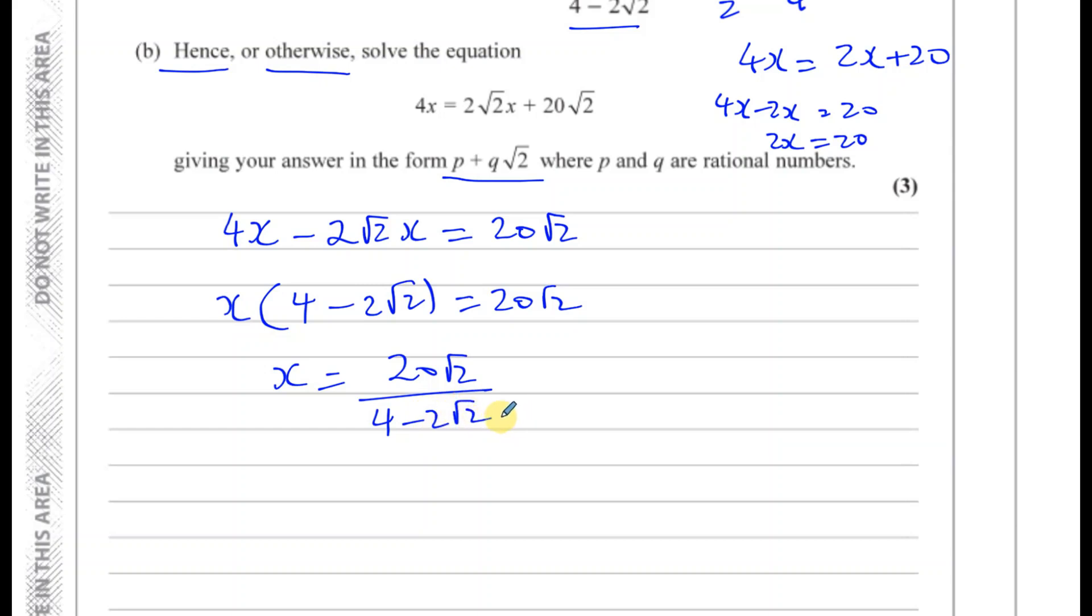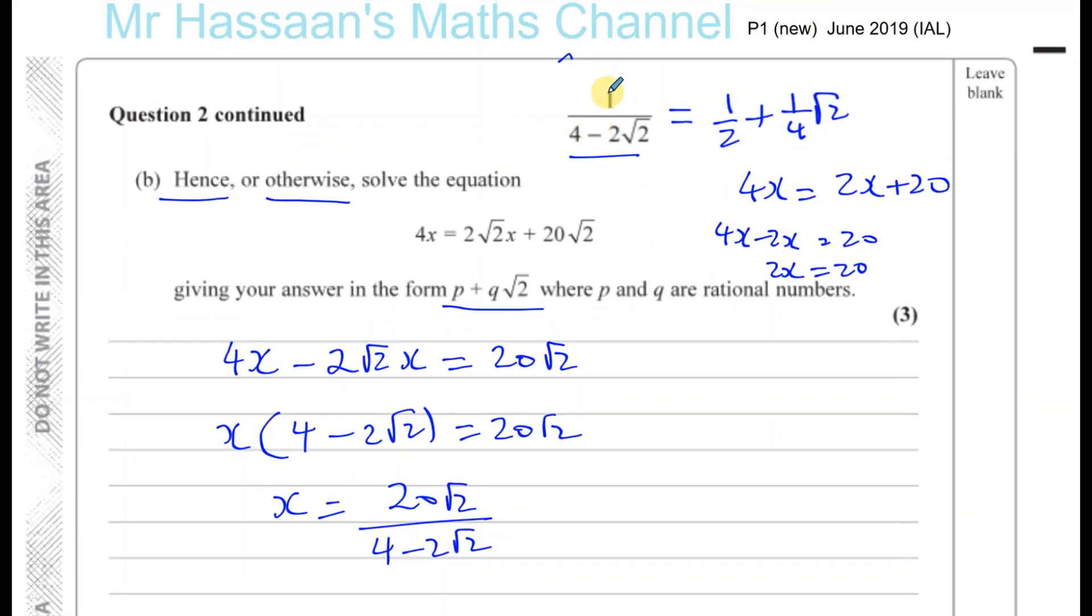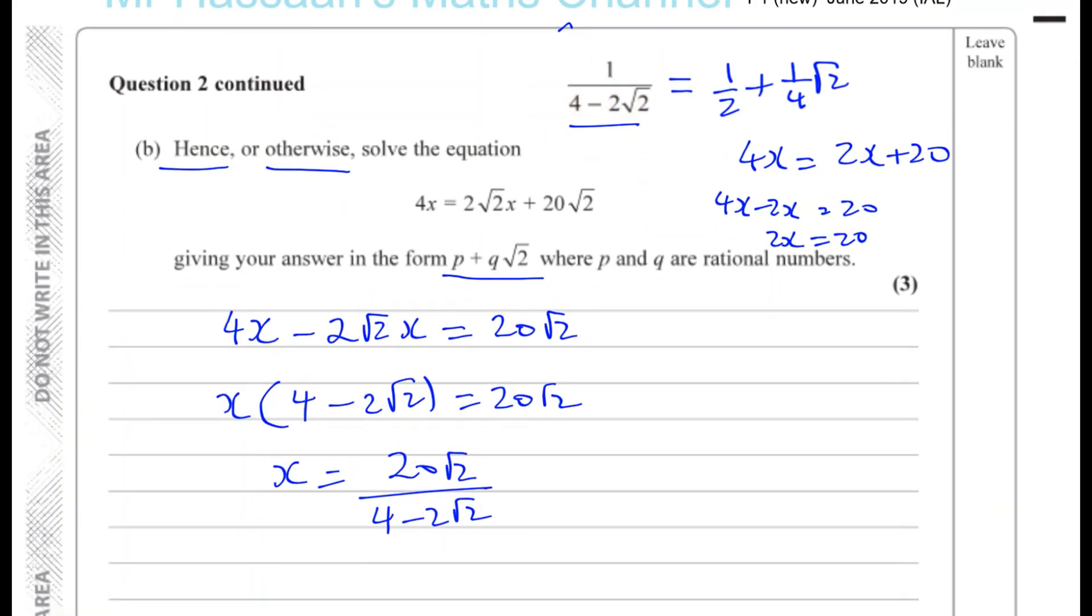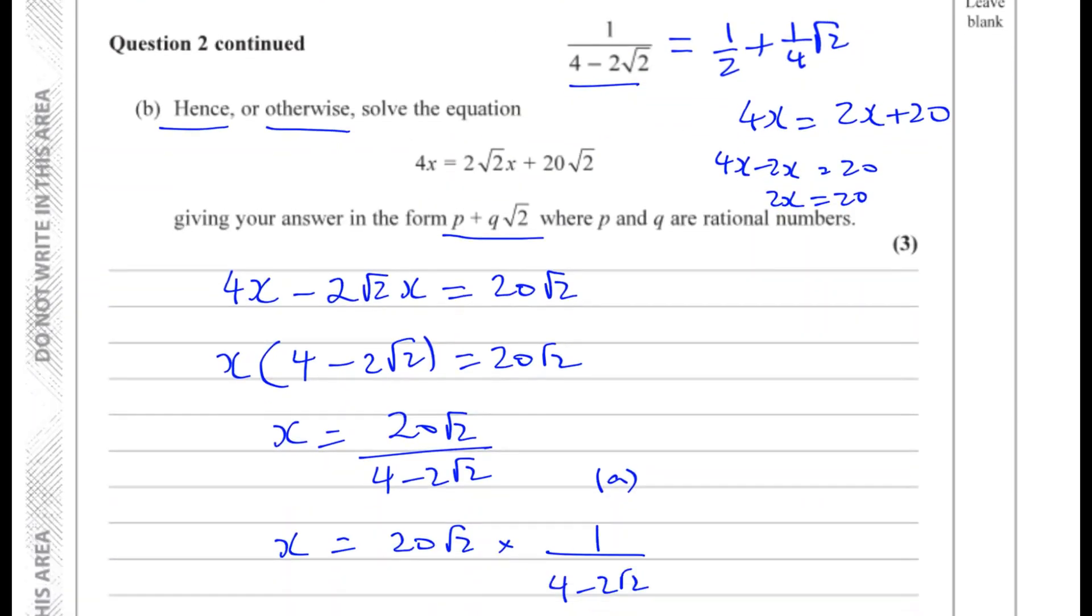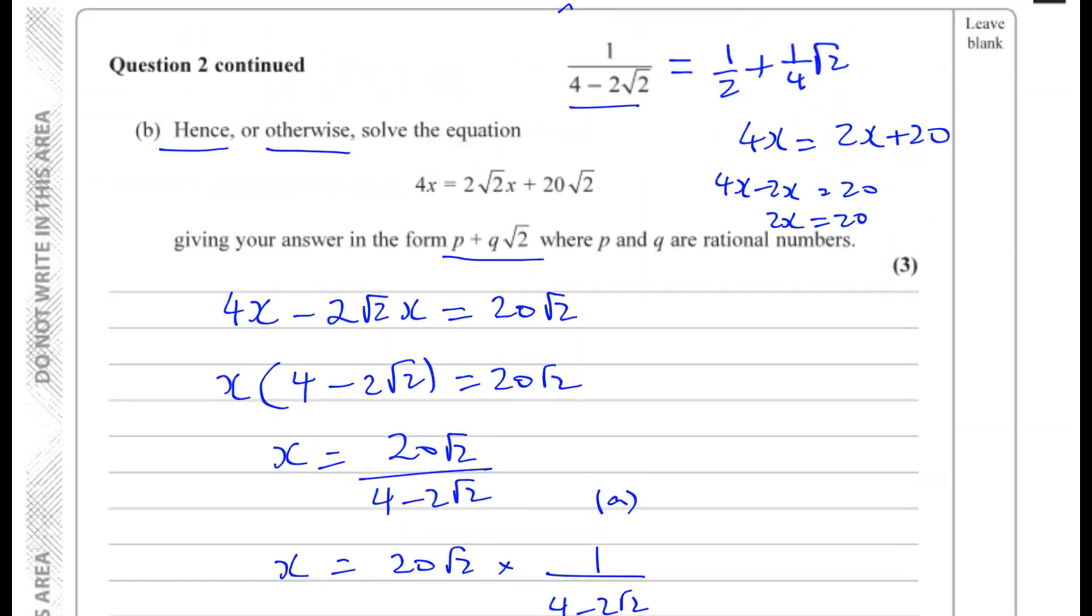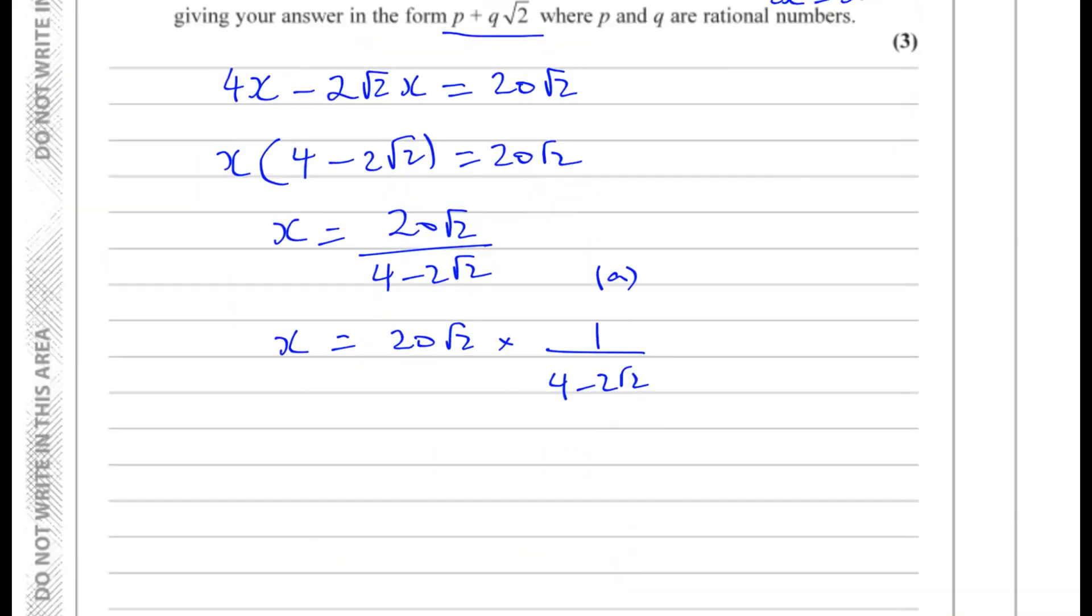Now I can see the similarity between this and part A. I've got a 1 over 4 minus 2√2 and here I've got 20√2 over 4 minus 2√2. So I could rewrite this as 20 times √2 times 1 over 4 minus 2√2. Now this is the same as part A. And I already rationalized this. So this is where the hence part comes in. So now I'm going to use, well I made this as a half plus a quarter √2 and multiply it by 20√2.